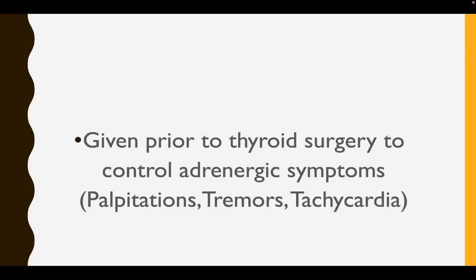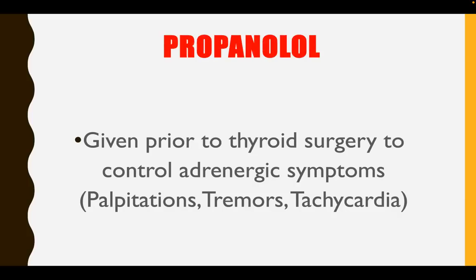What drug is given prior to thyroid surgery to control adrenergic symptoms such as palpitations, tremors, and tachycardia? We give a beta blocker, and the beta blocker of choice is propranolol. If there is an intraoperative arrhythmia that occurs, then intravenous beta blocker such as esmolol would be the drug of choice.